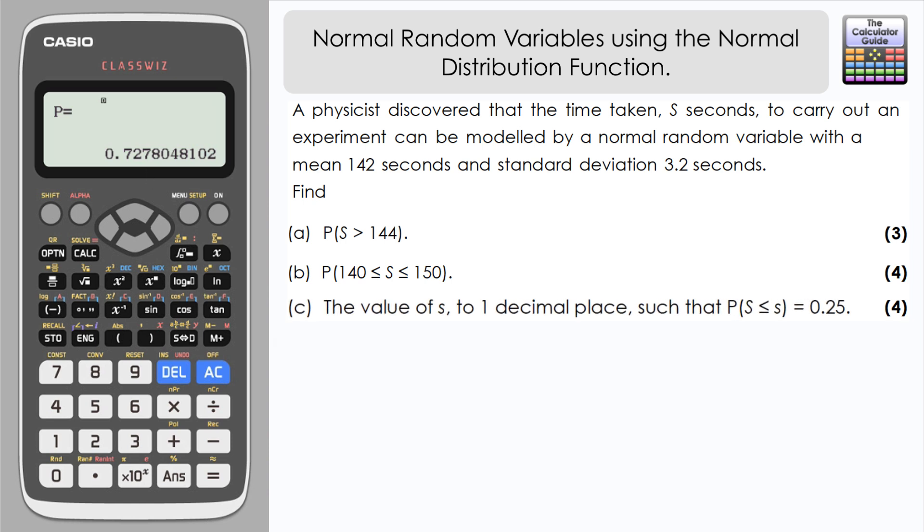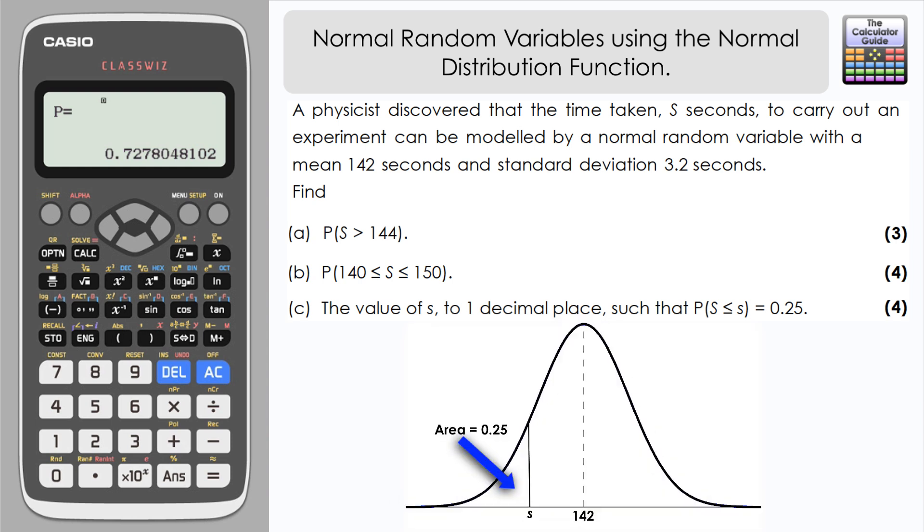Part C says the value of little s to one decimal place such that the probability that S is less than or equal to little s equals 0.25. What this question is really asking is if we imagine the normal distribution curve, the total area underneath that curve is equal to the total probability, which is equal to one.